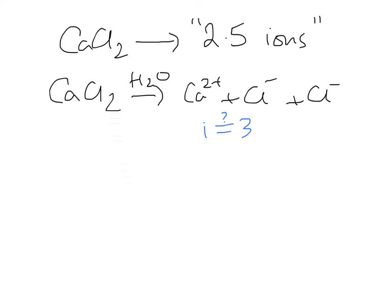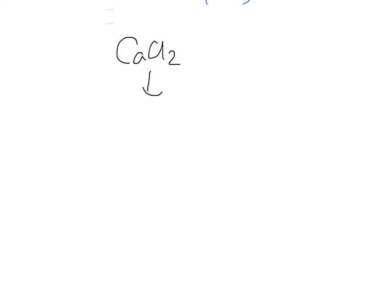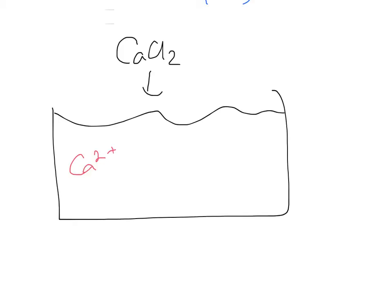And the answer is ion pairing. So what happens, of course, is when you add calcium chloride into a solution, it does break down. In fact, here we go, here's my bucket, I'm adding it in. The calcium is going to form a calcium two plus, and it's going to form a chloride and a chloride.